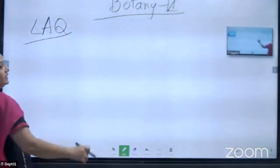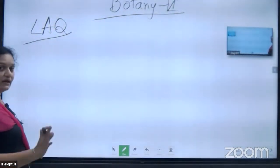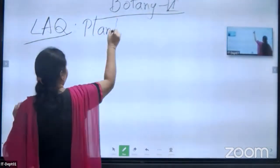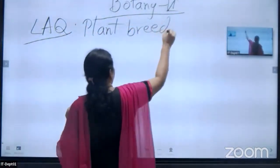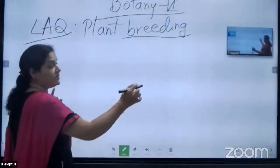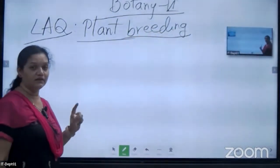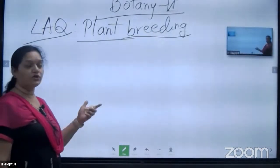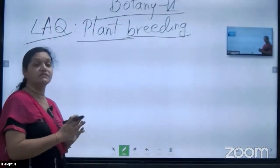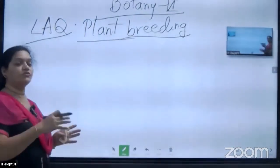The first LAQ we are preparing is from the thirteenth chapter — Strategies for Enhancement of Food Production. The first question is on plant breeding. The question will be: 'If you are a botanist working in your garden to breed the plants according to your interest, what are the steps you will follow?' We have to write in a systematic manner — what is meant by plant breeding and the steps.